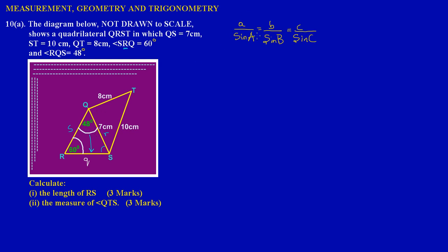When to use the sine rule: you must have two angles in a triangle. This is a quadrilateral but it can be divided into two triangles. To solve for side RS (little q), I'm going to consider triangle RQS. In that triangle I have two angles: 60 degrees and 48 degrees. I'll match the 60-degree angle at R with the opposite side QS (little r), which is 7 cm.